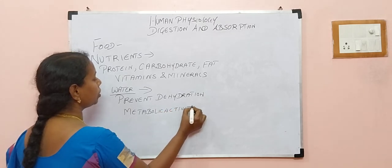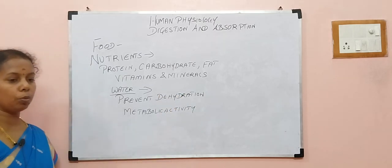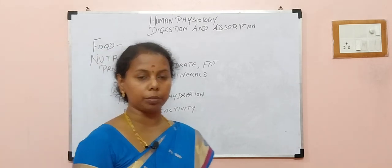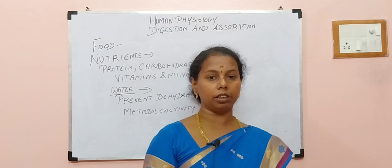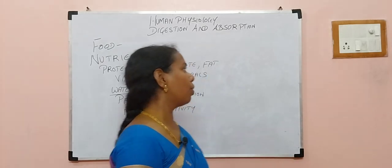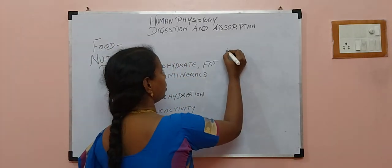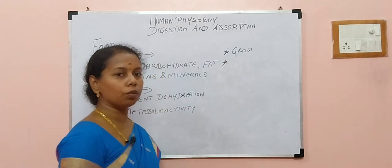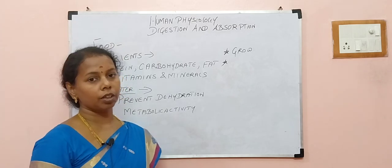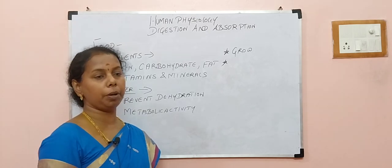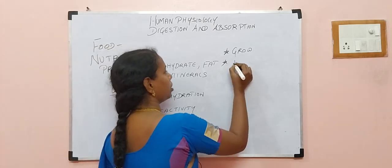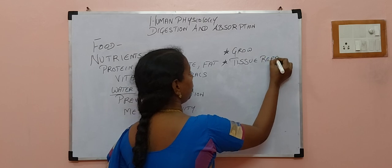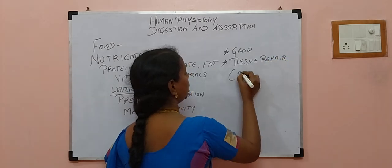And what do the other nutrients perform? So when you are born, you have a small baby. Now you are grown up, an adolescent boy and a girl — that is because of your nutrients, so it helps us to grow. When we fell down, we get a wound, and then later on, after a week, it gets repaired. The tissue repair is because of our nutrients. The tissue repair is even called as rejuvenation.